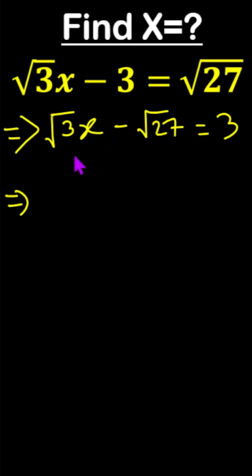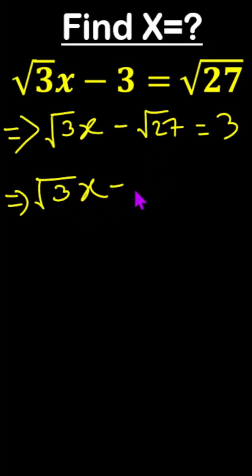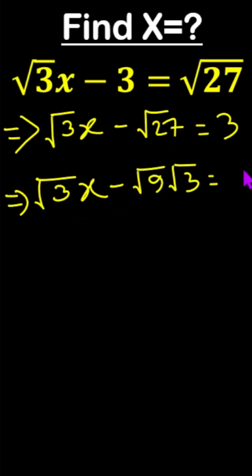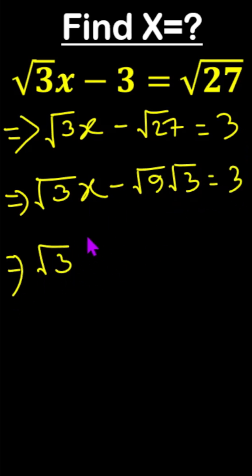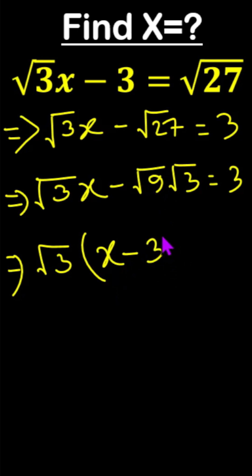We can take common root 3, or we can write root 27 as root 9 times root 3, which equals 3. So now we take common root 3, and here x minus root 9 — we can write that as 3 — equals 3.